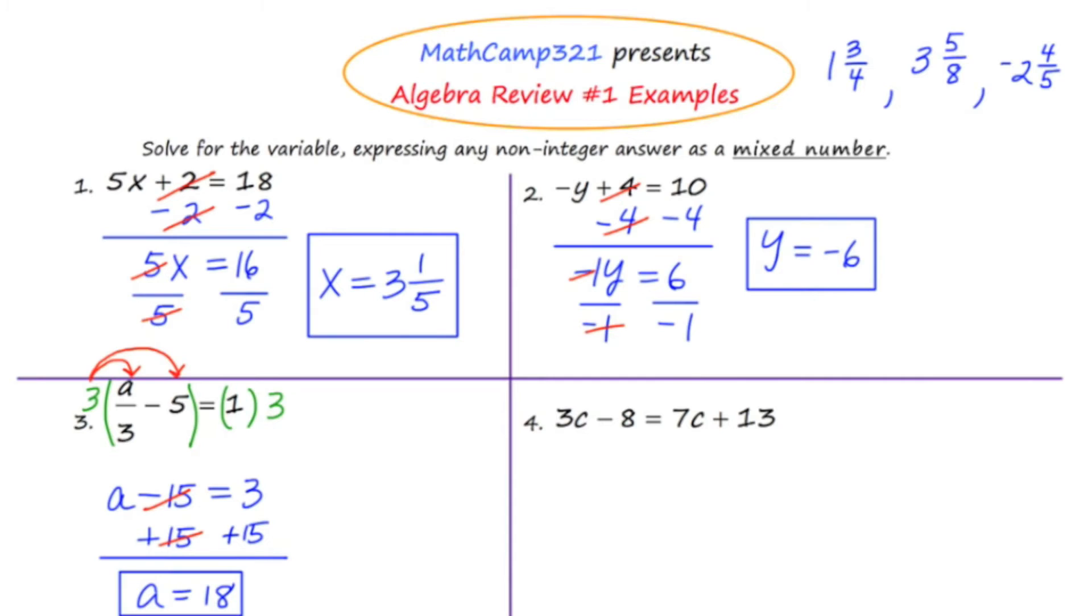Let's move to our last example on this slide. The last example is 3c minus 8 equals 7c plus 13. The thing that should strike you about this problem is that there are variables on both sides. We want to get all the elements or all the terms that have a c to one side and all the terms that don't have a c to the other side. My recommendation would be to do this one step at a time. If students try to do too many steps in one maneuver, then they make a careless error. Let's start by getting all of the numbers to one side, and I'm going to start by adding 8 to both sides.